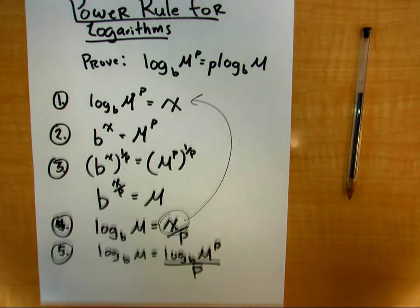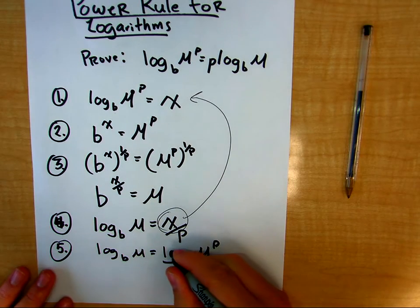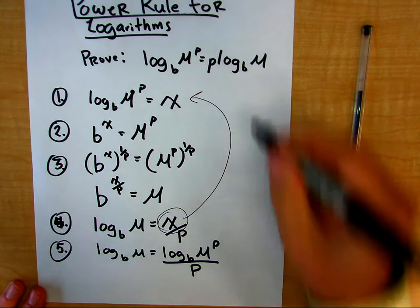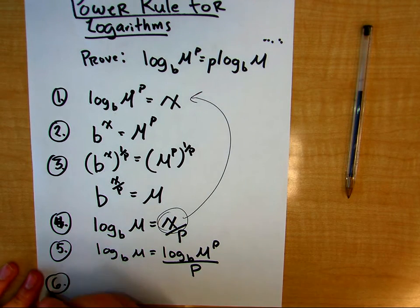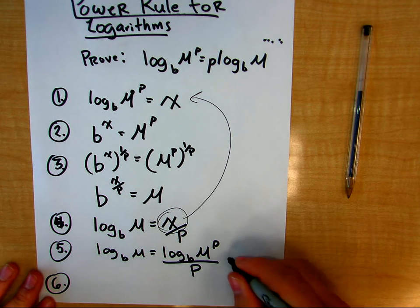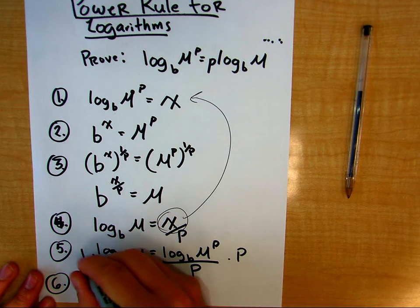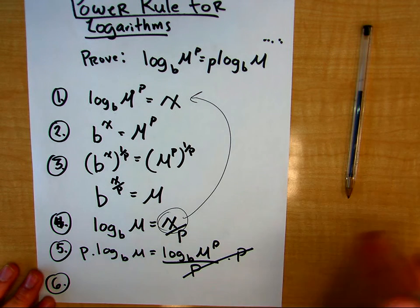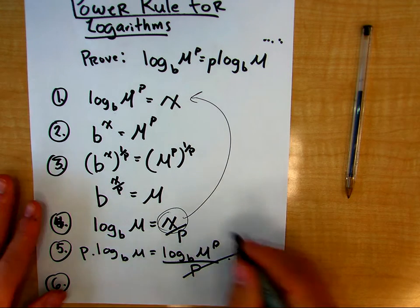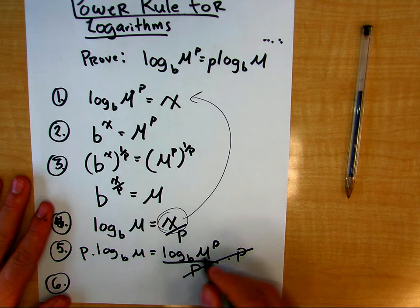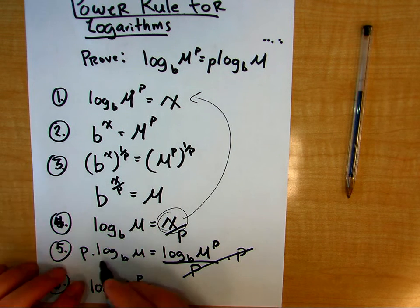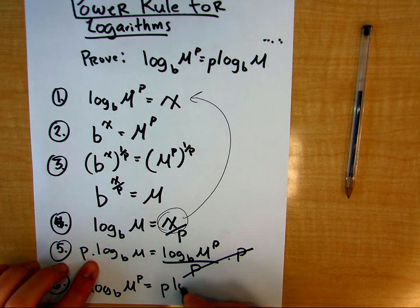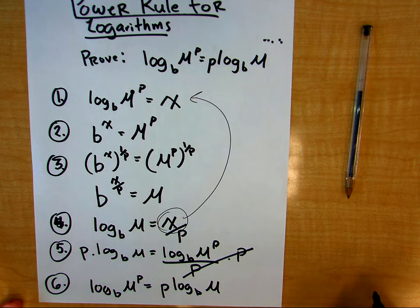And my final step here, I think you can see where I'm going with this, is I'm going to multiply both sides by p. I want to get this p out of the denominator. So now I have, let's switch this around and just say log base b of m raised to the p power is equal to p times log with base b of m.